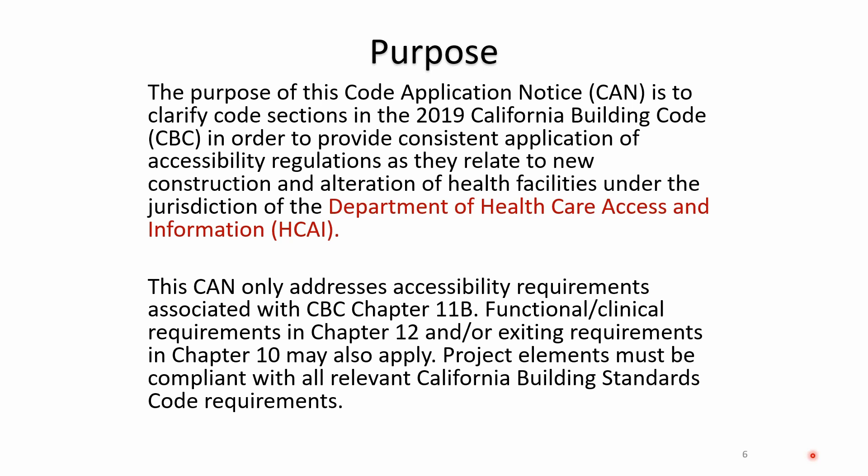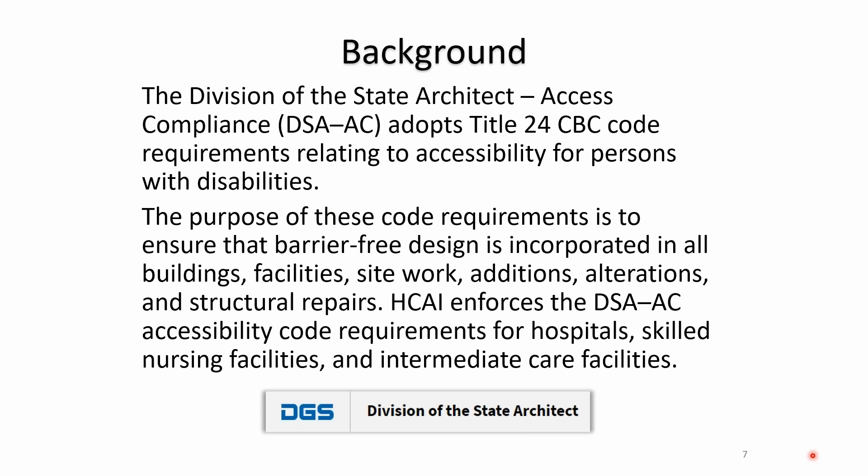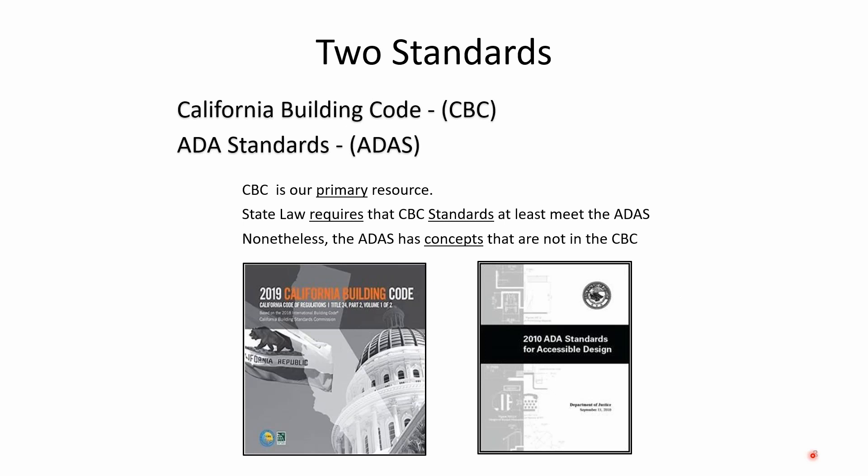Project elements must be compliant with all relevant California Building Standard Code requirements. The Division of State Architect Access Compliance adopts Title 24 in the California Building Code with all requirements relating to accessibility for persons with disabilities. The purpose of these code requirements is to ensure barrier-free design is incorporated in all buildings, facilities, site work, additions, alterations, and structural repairs. HCAI only enforces the DSA AC accessibility code requirements for hospitals, skilled nursing facilities, and intermediate care facilities.